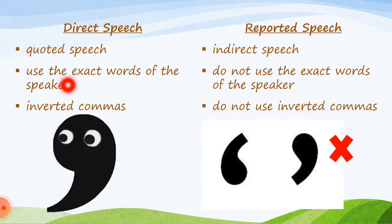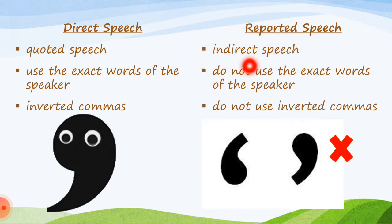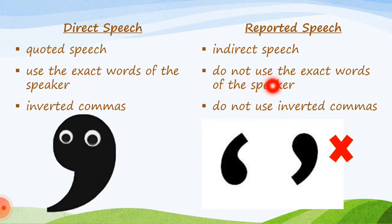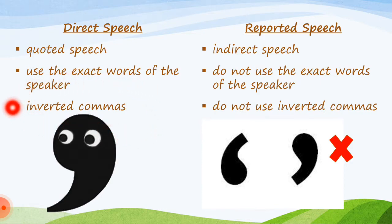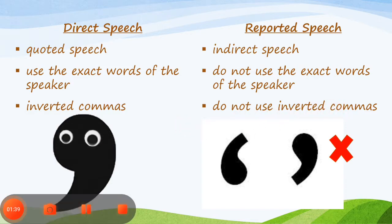Direct speech is also known as quoted speech, whereas reported speech is also known as indirect speech. Direct speech always uses the exact words of the speaker, whereas reported speech does not. Direct speech is always presented with inverted commas, whereas in reported speech we do not use inverted commas.